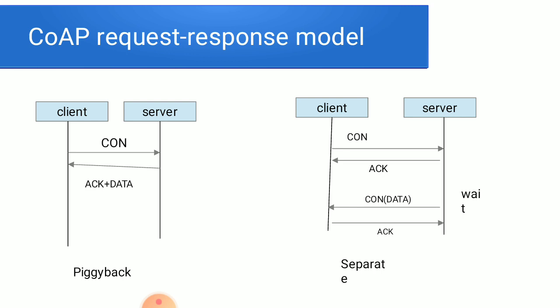In the separate message type, the client sends a connection request to the server, and the server responds with an acknowledgement. It then waits for some time before sending the data. The server then sends the next response, and the client sends another acknowledgement. The difference between piggyback and separate is that in piggyback, the acknowledgement and data are combined, while in separate they are sent individually.